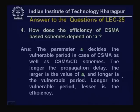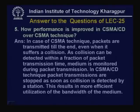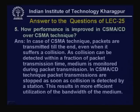In slotted ALOHA, packets are transmitted in fixed time slots, reducing the vulnerable period from 2tf (pure ALOHA) to tf, improving throughput from 18.4% to 36.8%. In non-persistent CSMA, the medium is re-sensed after a random amount of time when found busy; in persistent schemes, the medium is continuously sensed. The parameter a determines the vulnerable period — longer propagation delay means larger a and longer vulnerable period, reducing efficiency. In CSMA/CD, packet transmissions are stopped as soon as collision is detected, resulting in more efficient utilization of bandwidth. This concludes today's lecture. In the next lecture we shall discuss channelization techniques of medium access control. Thank you.